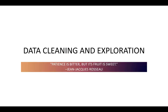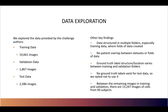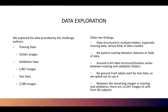The first step in our analysis is data cleaning and exploration. We explored data comprised of training, validation, and test data. Key observations include that data is structured in multiple folders, especially the training data, where folds of data were created. There is no patient overlap between data sets or folds. The ground truth label structure and location varies between training and validation folders. We also discovered that no ground truth labels existed for the test data, so we opted not to use it.